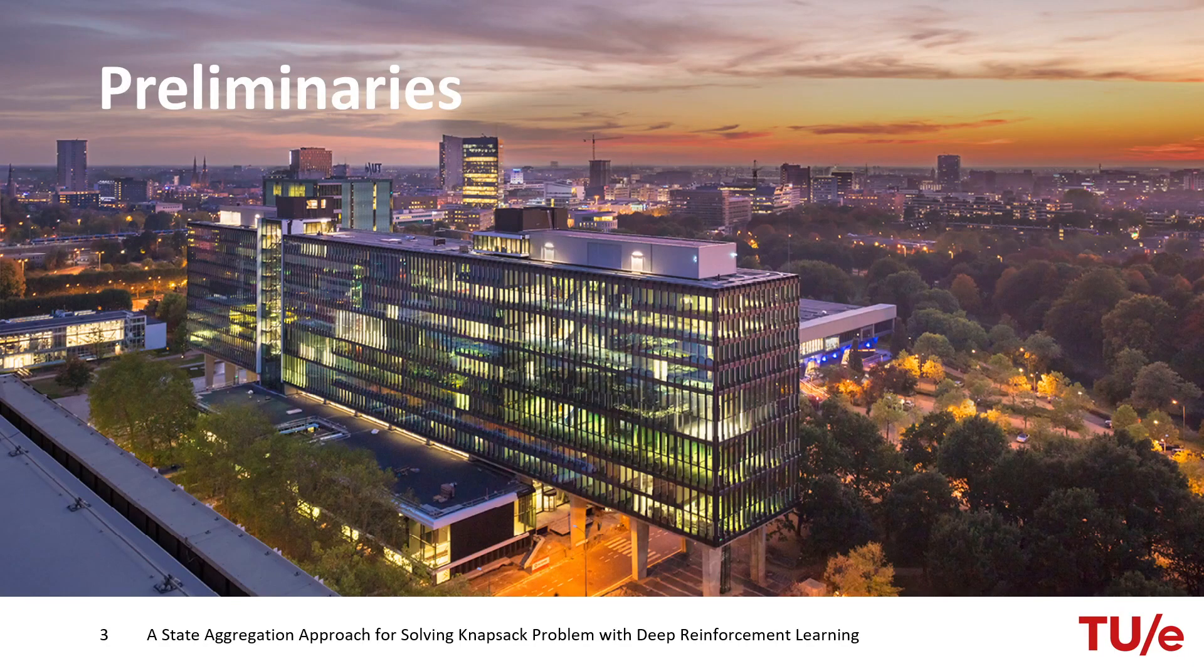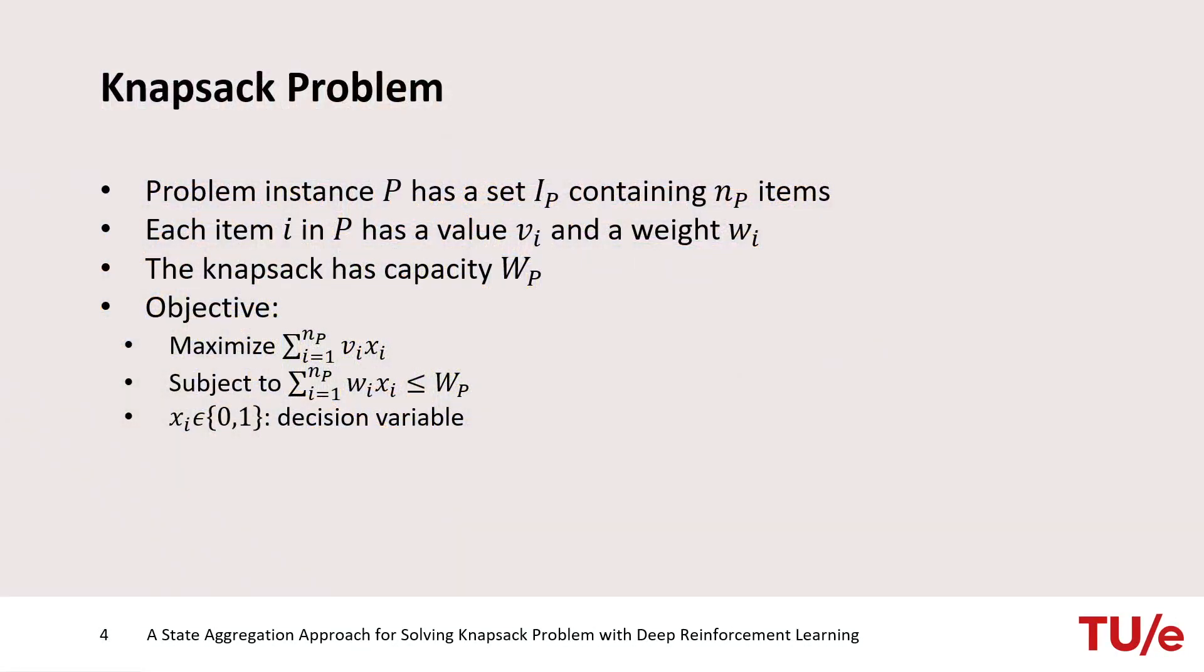Let's start with some background on Knapsack Problems and Deep Reinforcement Learning. Basically, in Knapsack Problem there are N available items which have a value or profit and a weight. The knapsack has a capacity constraint and the goal is to fill the knapsack with the items so that total profit is maximized and the total weight does not exceed the capacity constraint.